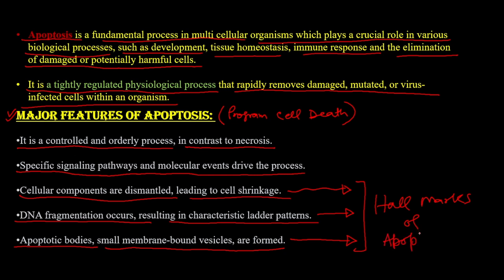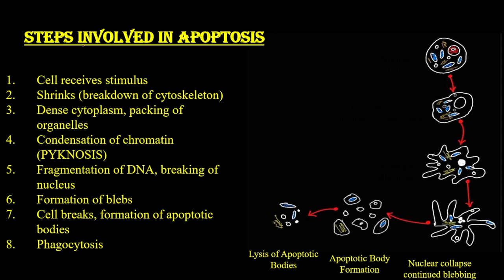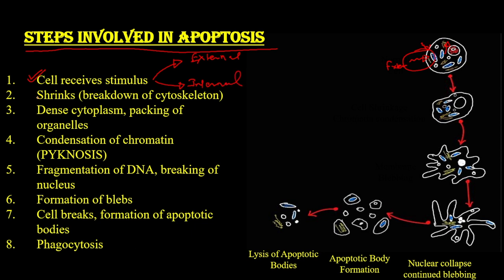Apoptosis starts with the cell receiving a signal. The first step is that the cell receives a stimulus, which could be an external or internal signal. Once the stimulus is received, it induces shrinkage as well as the breakdown of the cytoskeleton, making the cell more flexible so that it can get condensed.